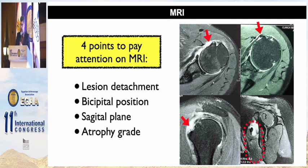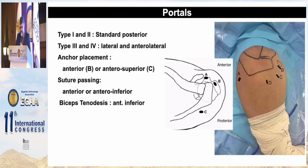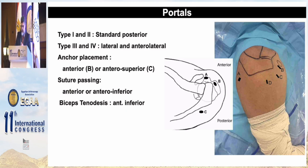Lesions are most common in the superior portion of the subscapularis. Regarding portals, for types 1 and 2 we use just the articular view with the standard posterior portal. For types 3 and 4, we use lateral and anterolateral portals. For anchor placement, we use the anterior or anterosuperior portal, and for suture passing, the anterior or anteroinferior portal.